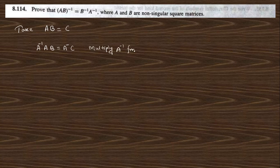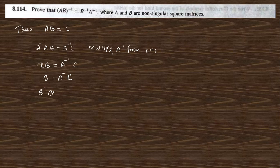We multiply A inverse from the left-hand side on both sides. A inverse times A gives the identity matrix I, so this gives B equals A inverse C. Now, if you multiply with B inverse from the left-hand side, B inverse B will be I, so this gives I equals B inverse A inverse C.